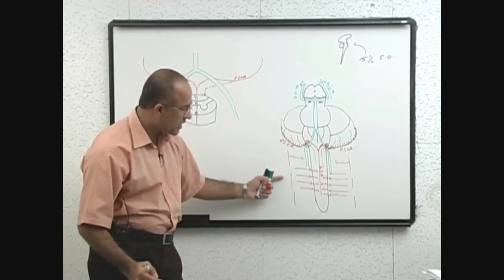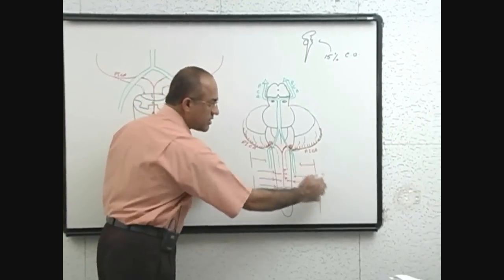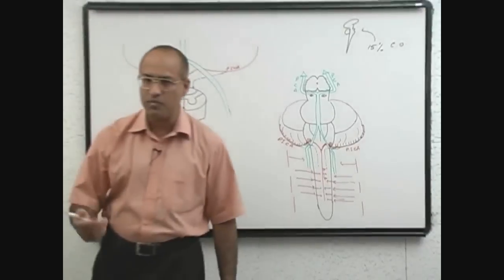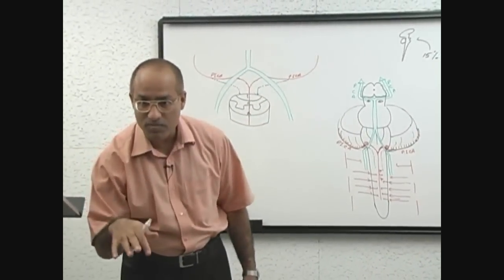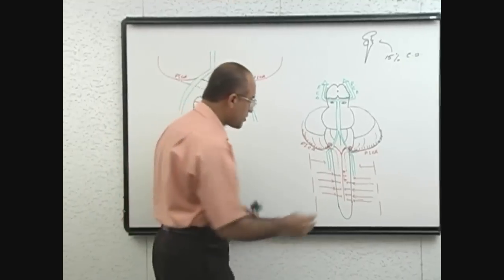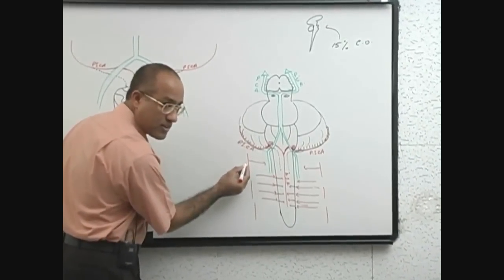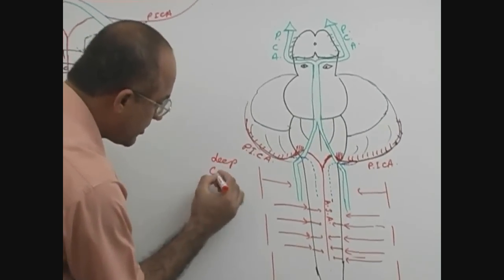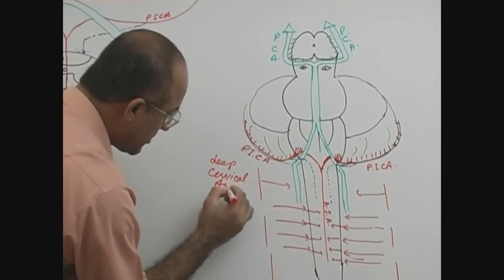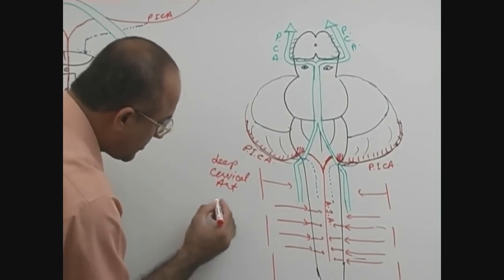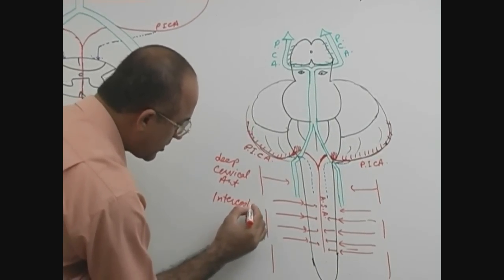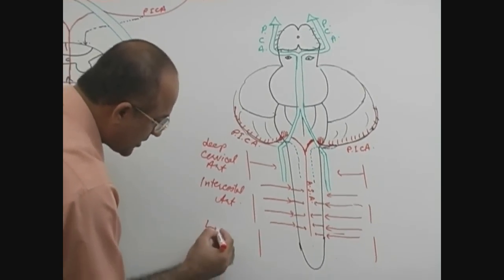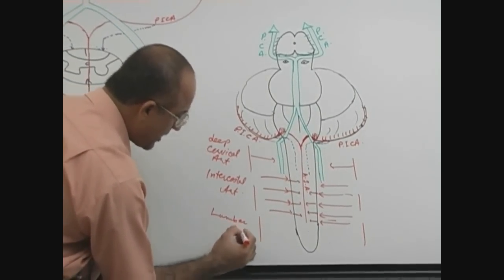At least you must know three important arteries which are giving segmental branches to reinforce the blood flow into spinal arteries. What are these? Yes, deep cervical arteries. And then the second group is intercostal arteries in the thorax, and lumbar region, these are lumbar arteries.